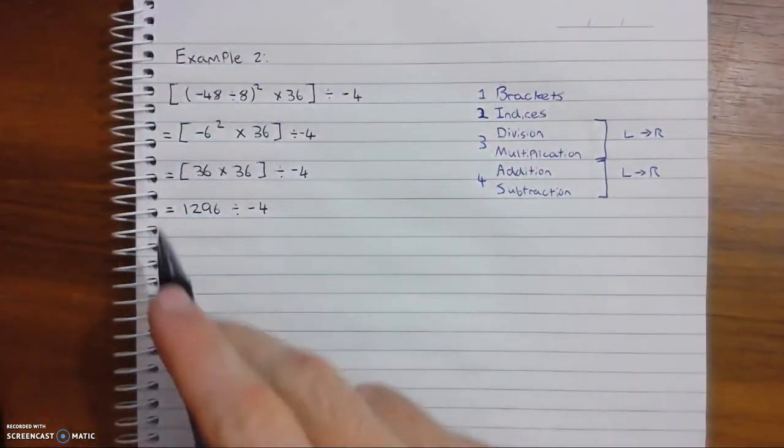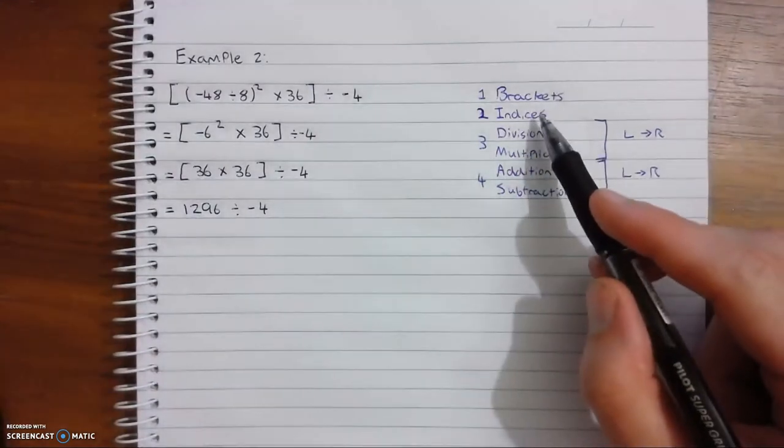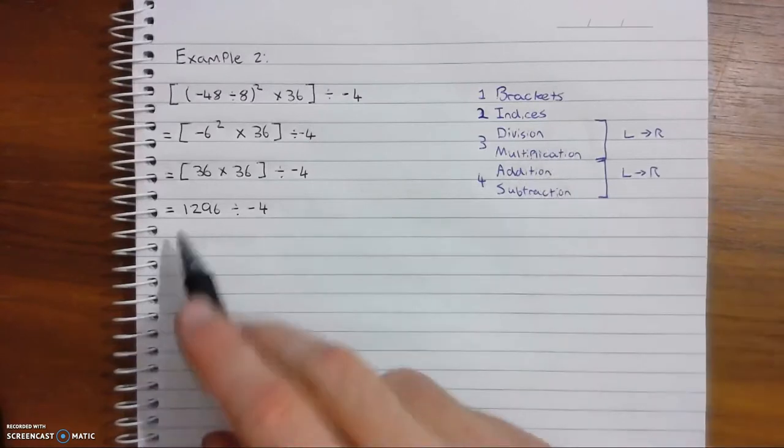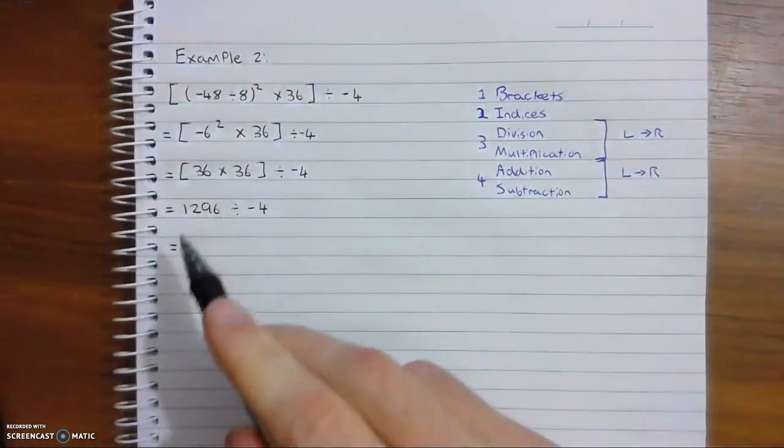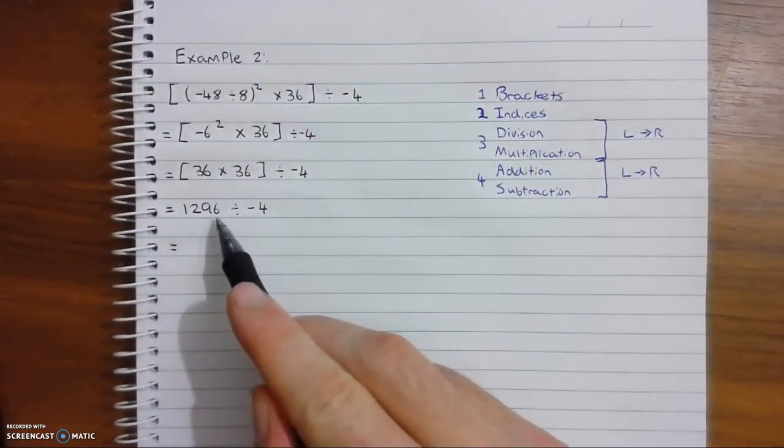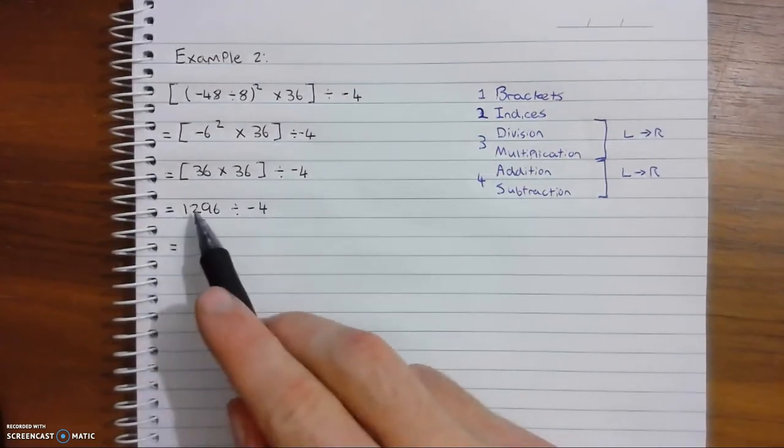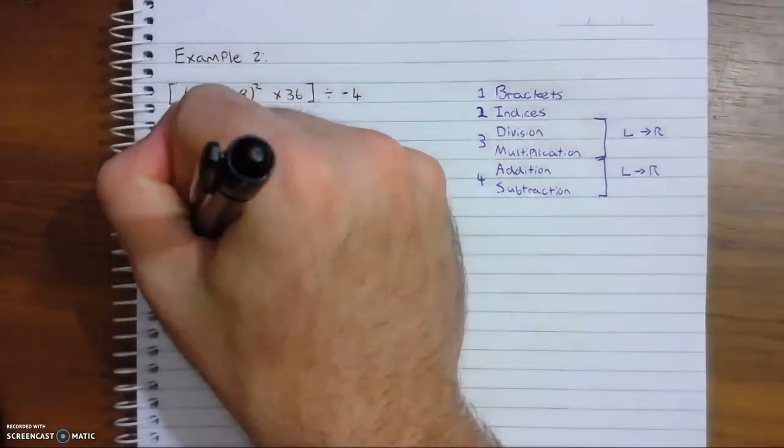Alright, now we don't have any brackets. We don't have any indices left. Now we're on to division and multiplication. 1296 divided by negative 4 equals, we know it's a negative because these two signs are different.